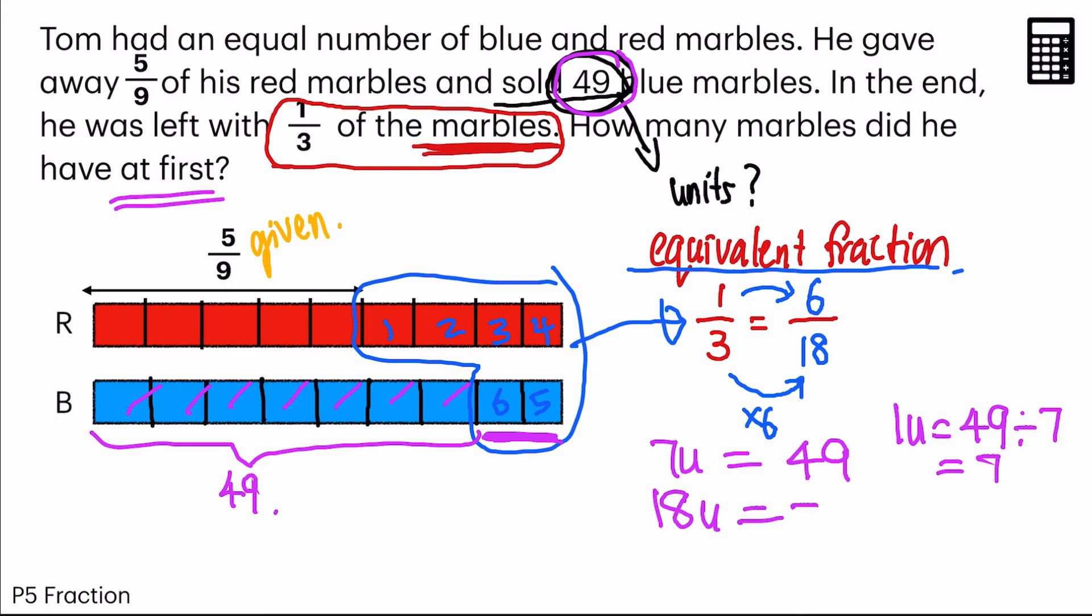So 18 units will be 7 times 18, giving us 126. And that's the final answer.